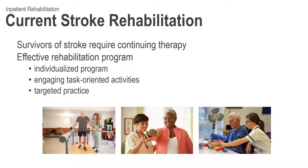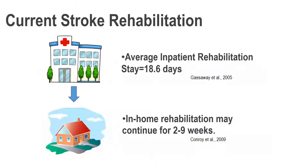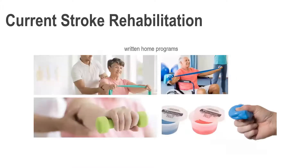But this is all about inpatient rehabilitation. After returning home, stroke survivors are required to conduct in-home rehabilitation that may continue for 2 to 9 weeks. The general approach for in-home rehabilitation includes exercises using an elastic tubing band, which has been clinically proved to augment functional ability and reduce disability.